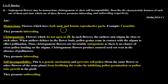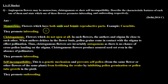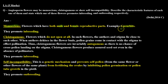Let's check the answer. Monoecious flowers are those flowers which have both male and female reproductive parts present. Example: cucurbits. These flowers promote in-breeding.